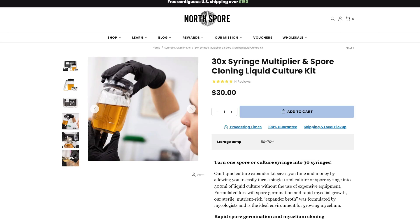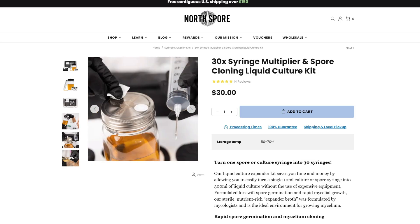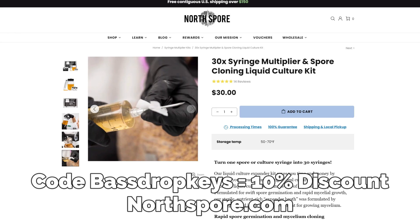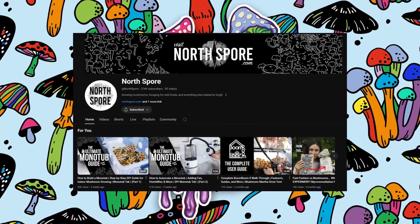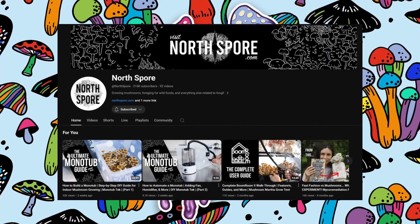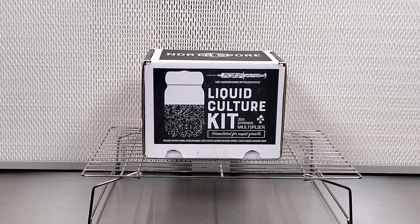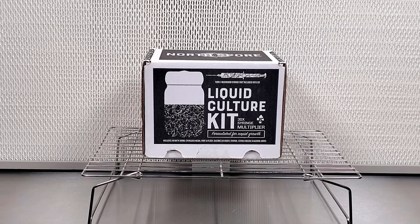If you want to try the NorSpore liquid culture kit for yourself or any of the great NorSpore products, use the code BassDrop Keys. That will give you a 10% discount on any order at NorSpore.com. And if you guys haven't already subscribed to the NorSpore YouTube channel, make sure you do that. The link will be in the description.